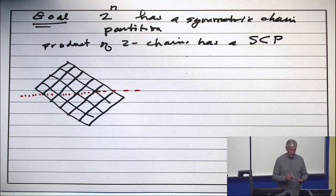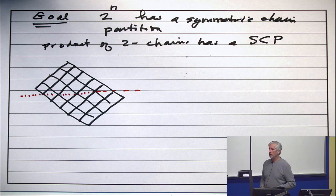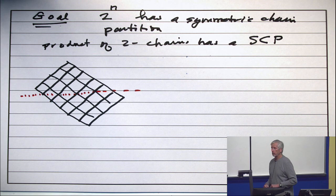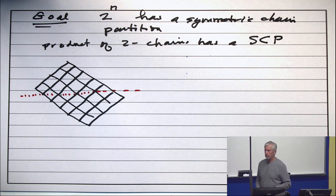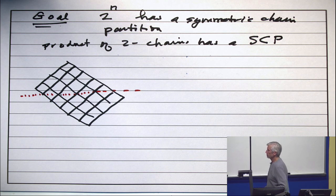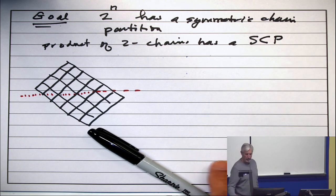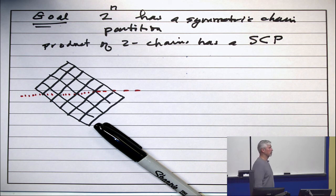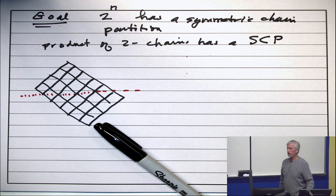Now, you look at that picture and see if you see a symmetric chain partition. Hint, one of the chains has got to contain that bottom point. What does it do after that? It might go like this, right up to the top. Bad move. That makes it confusing.